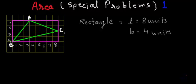Now you must be wondering — originally we were supposed to find the area of a triangle, but why are we talking about the dimensions of the rectangle? We can easily find the area of this rectangle, and if we remove the areas of this triangle, this triangle, and this triangle from the area of the rectangle, we will be left with our original triangle. So in this method we are indirectly finding the area of the triangle, because we are not able to find any of the dimensions of the original triangle directly. So we have inscribed that triangle into a rectangle, then we find the area of the rectangle and remove all these right-angle triangles from that area, and in turn we will find the area of our original triangle.